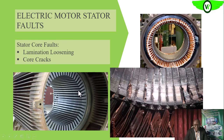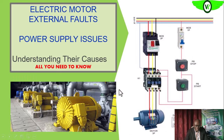Loose laminations are another issue. If the laminations are loose, during operation they can increase the vibration of the electric motor, which you would typically see at twice the frequency of the power supply in the vibration spectrum. Once the core is cracked, it can also result in problems within the electric motor.